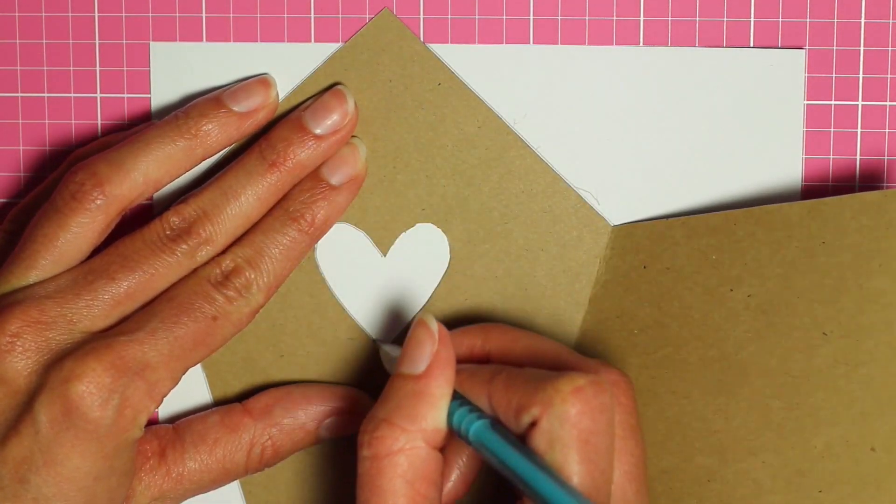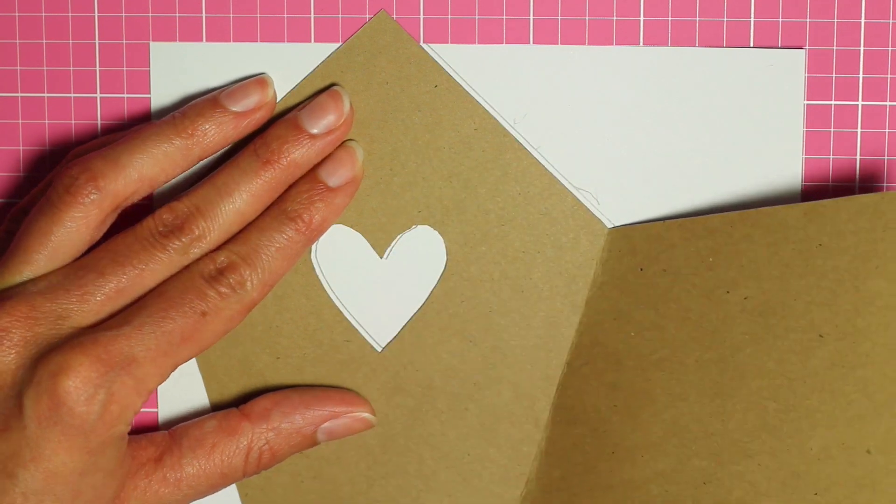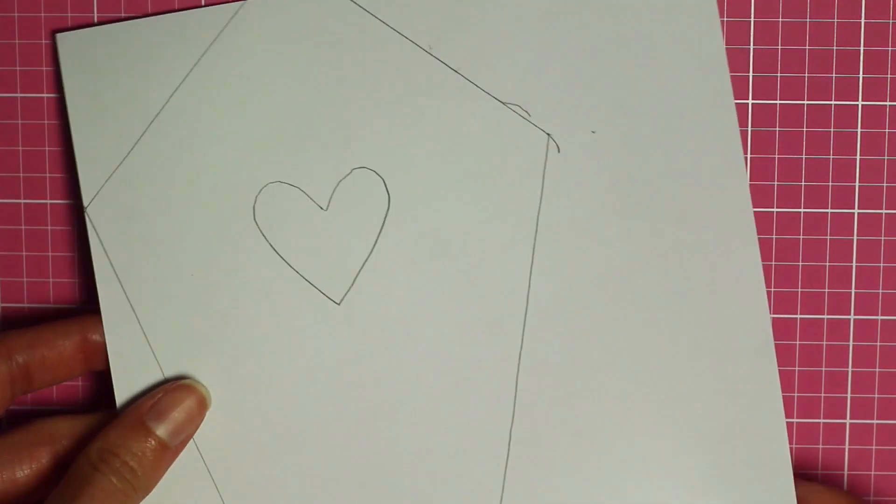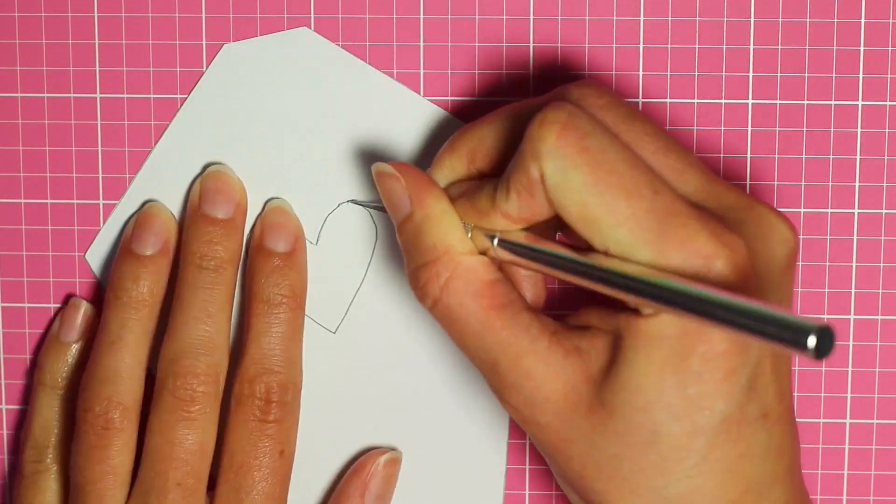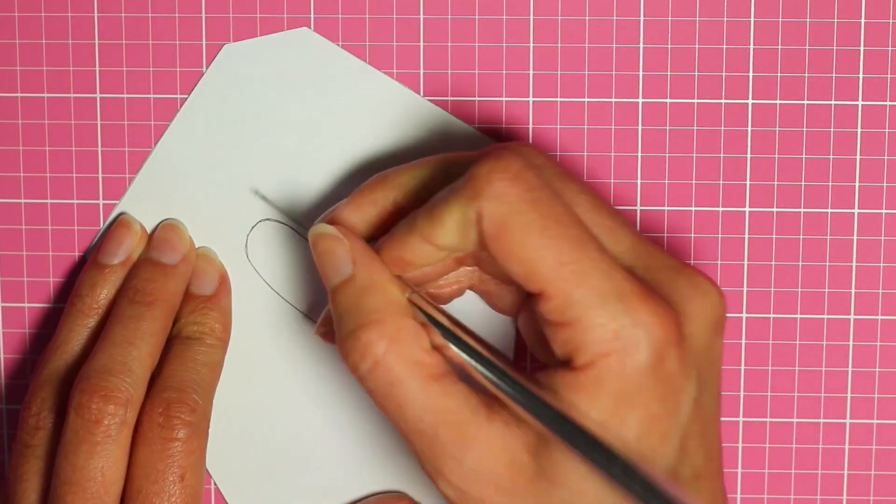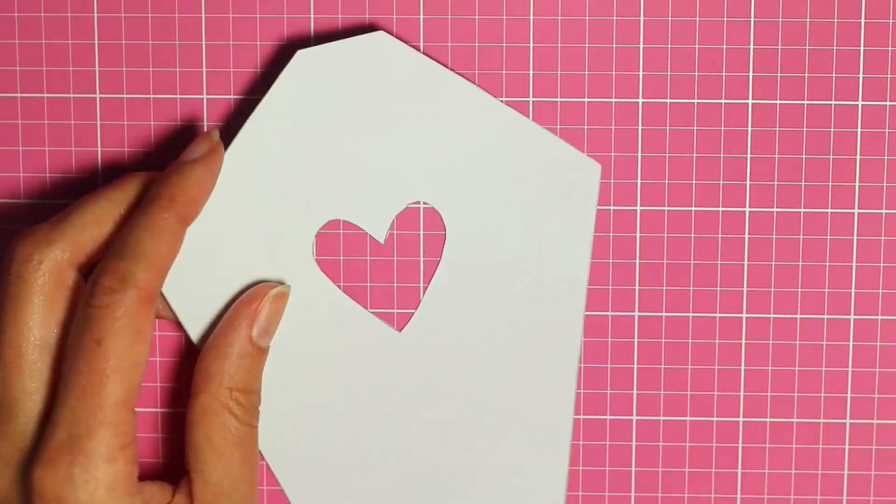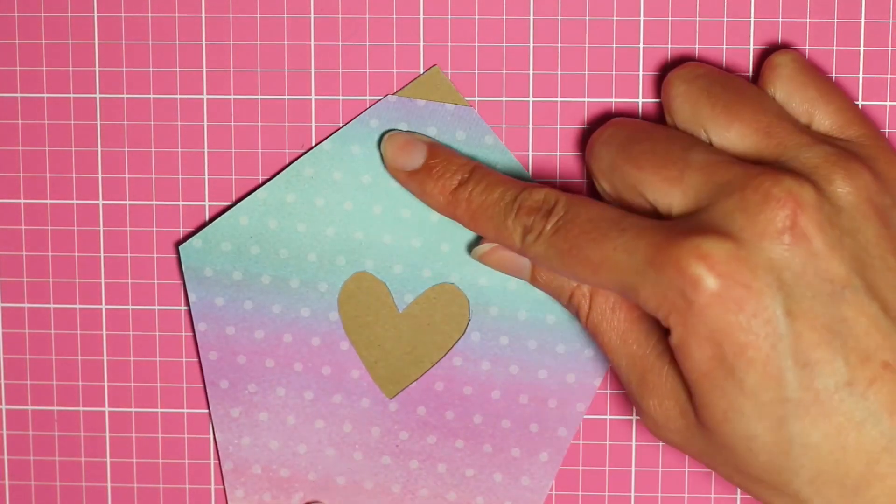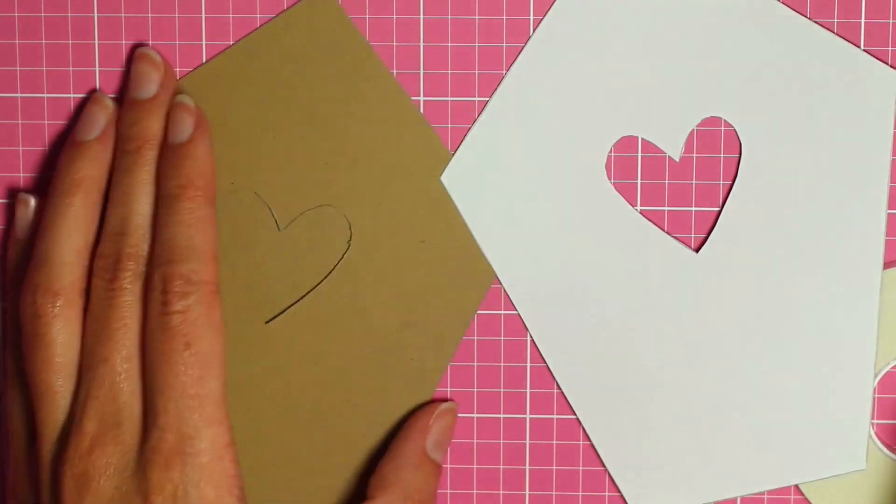And you'll want to trace around the heart and then cut that out. Then we're taking the exacto knife again to cut out the heart. So it looks like this. It should fit on the front of the birdhouse.